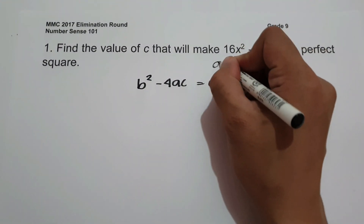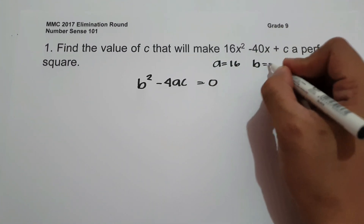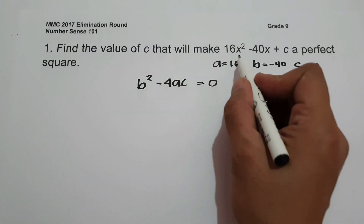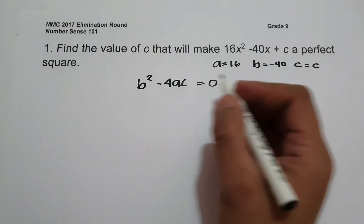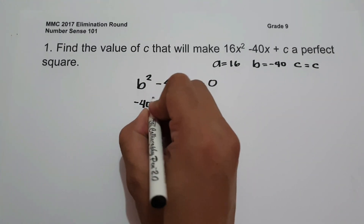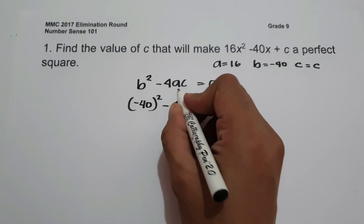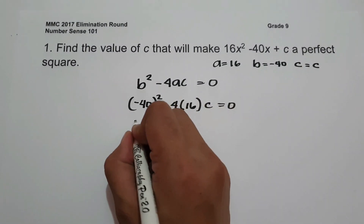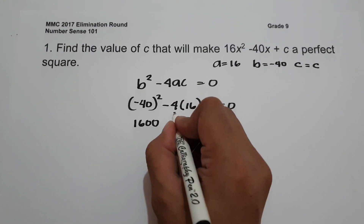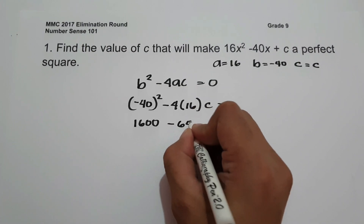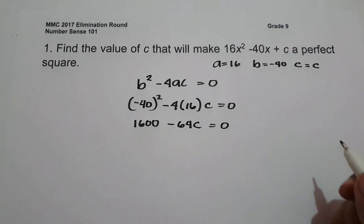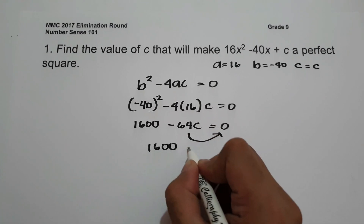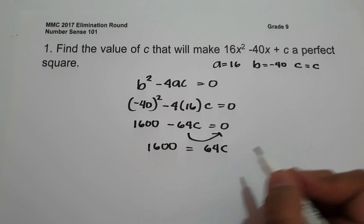The value of A is 16, the value of B is negative 40, and C is equal to itself. Let us substitute into the equation: negative 40 squared minus 4 times 16 times C equals 0. Negative 40 multiplied by itself is 1600, and negative 4 multiplied by 16 gives negative 64C equals 0. Moving negative 64C to the other side gives us 1600 equals positive 64C.